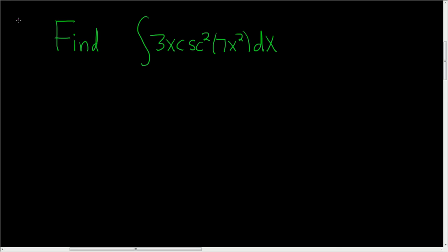Find the antiderivative of 3x times the cosecant squared of 7x squared. It looks like a u-substitution might be a good first approach.